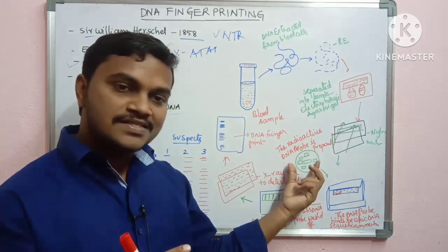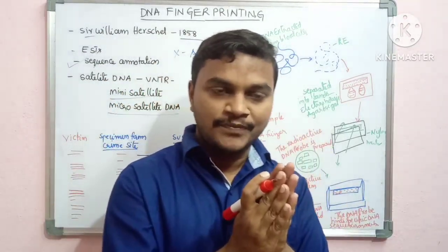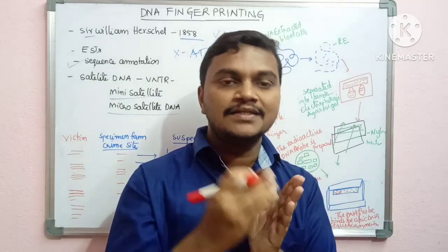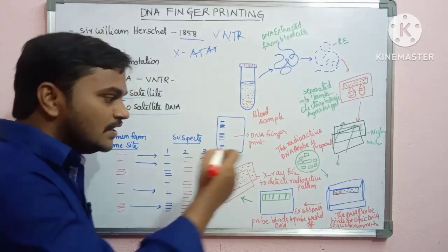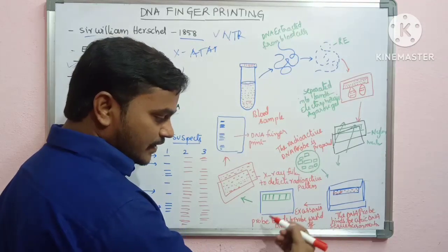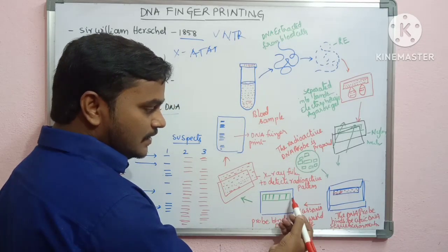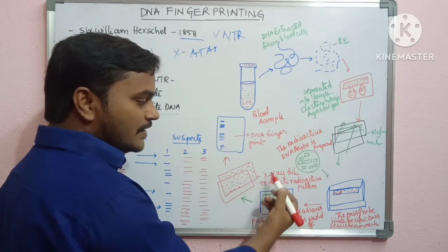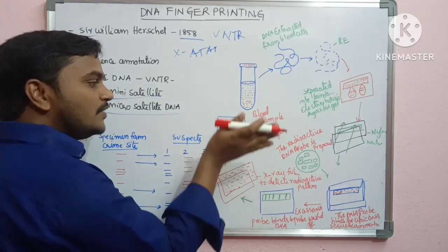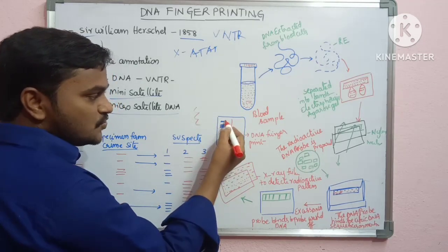The radioactive DNA probe is prepared as single-stranded. Excess probes are washed away, leaving only probe-bound DNA bands. We then use X-ray film to detect the radioactive pattern using an autoradiograph machine, which reveals the DNA banding pattern — this is the DNA fingerprint.